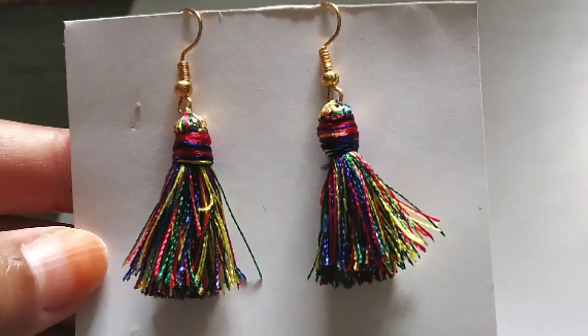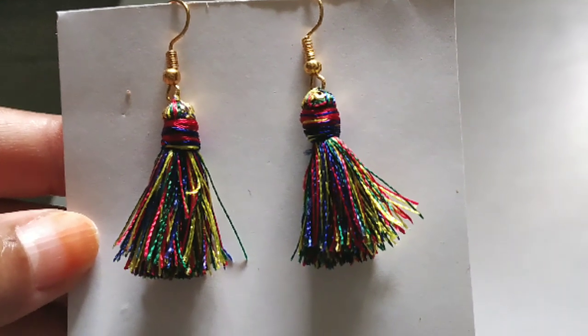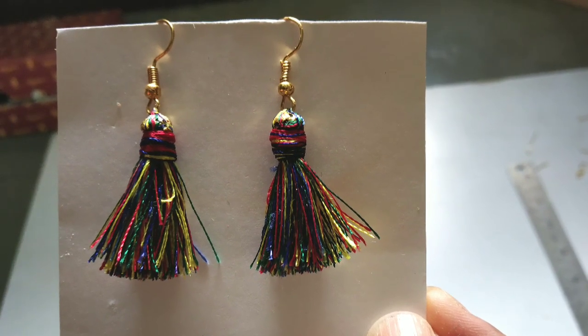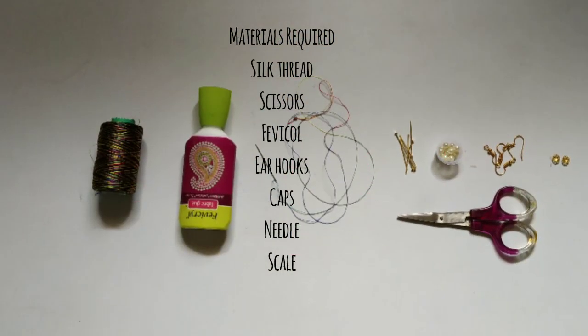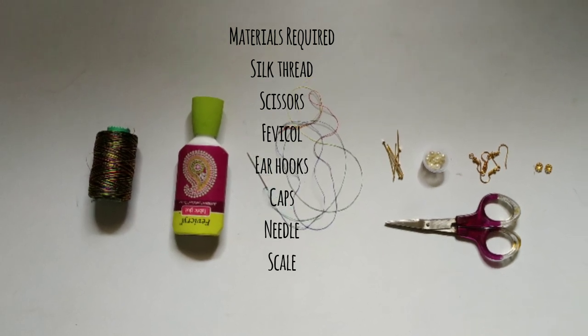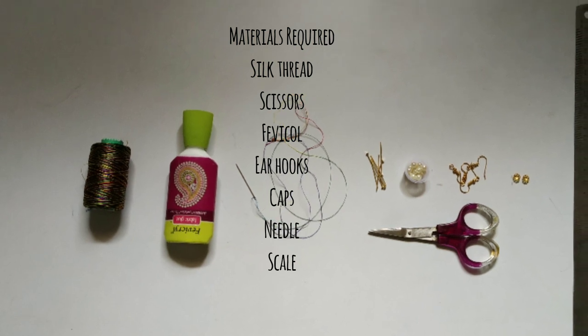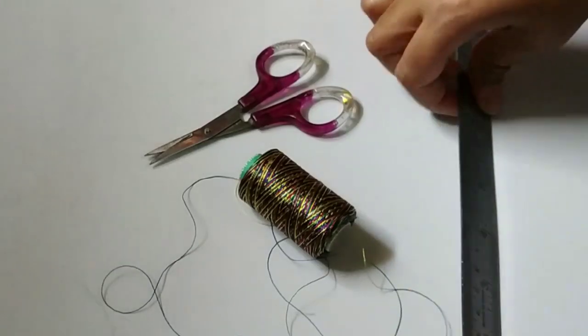Hey guys, welcome back to my channel. In today's video we're going to see how to make this simple tassel earrings. The materials required are silk thread, scissor, Fevicol glue, ear hooks, caps, needle, and a scale. So let's begin with the process.